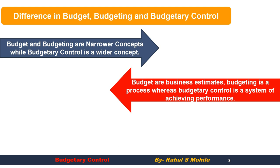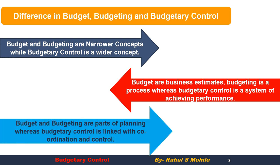Do not get confused — budget, budgeting, and budgetary control are three different things. Budget is finding the business estimates. Budgeting is a process that we follow. Budgetary control is a system through which we achieve performance. Budget and budgeting are parts of planning — we focus on planning and organizing. In budgetary control, we focus on coordination and controlling, meaning evaluation. So budgetary control focuses on evaluation, while budget and budgeting focus on planning.